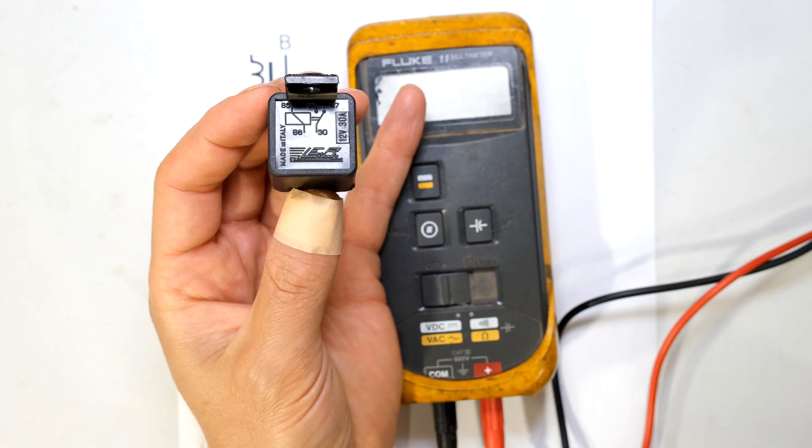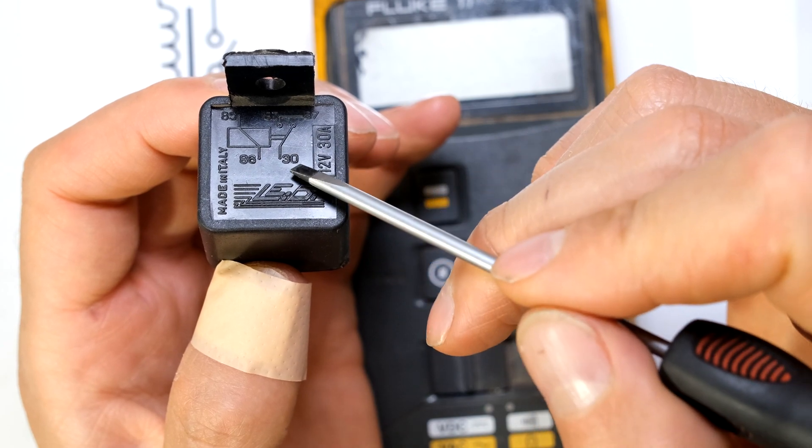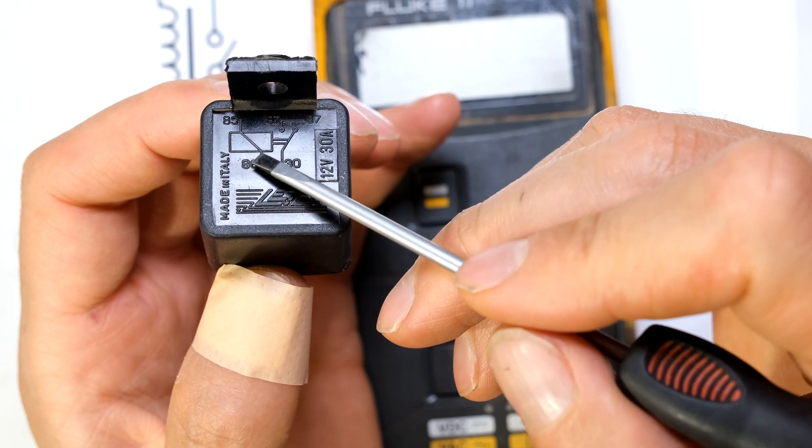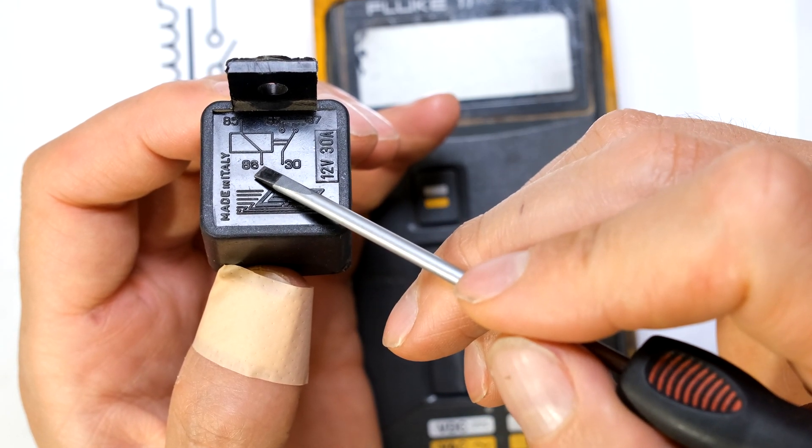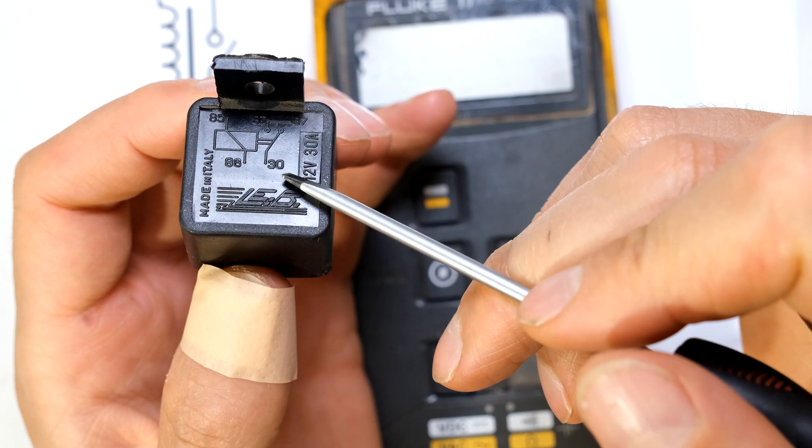Thereafter, I'll explain how to do the test if the diagram is not there. It says 85, 86, 87 and 30. Between 85 and 86 it's showing a little box, that box signifies a coil. 87 to 30, this is the contact section. This is your secondary circuit.